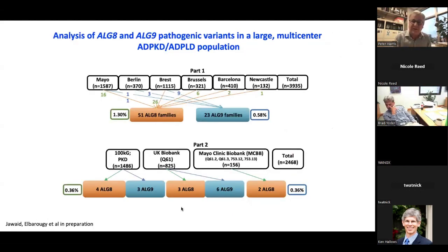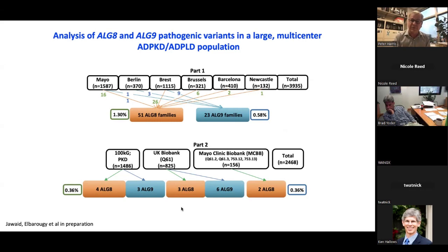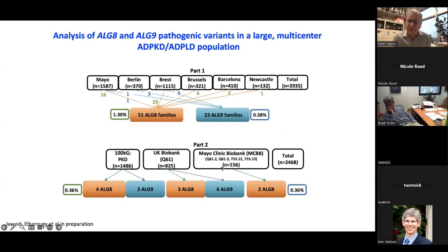Recently, we've been doing a study looking at ALG8 and ALG9 through a multi-centre collaboration. ALG8 has been associated with polycystic liver disease and has been enriched in ADPKD populations, and ALG9 has been associated with ADPKD. We wanted a better idea of the phenotype and frequency. In this collaboration, we identified 51 ALG8 and 23 ALG9 families, and also looked at the Genomics England project, the UK Biobank, and a Mayo Clinic Biobank.